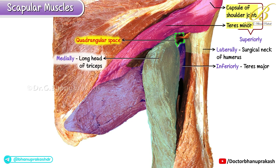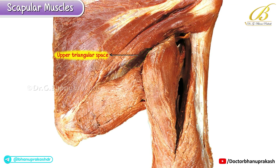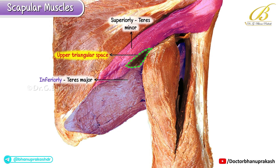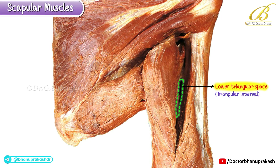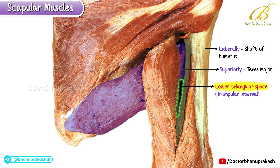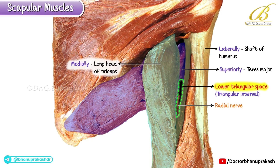The quadrangular space is bounded medially by the long head of the triceps and laterally by the surgical neck of the humerus. Through this space, you can observe the axillary nerve passing. The upper triangular space is bounded superiorly by the teres minor, inferiorly by the teres major, and laterally by the long head of the triceps. Finally, the lower triangular space, also called the triangular interval, is bounded superiorly by the teres major, laterally by the shaft of the humerus, and medially by the long head of the triceps. Within this space, the radial nerve passes through, as seen clearly in the specimen.